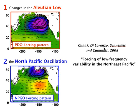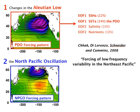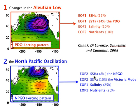A study being prepared by DeLorenzo, Snyder, and Cummins investigates the forcing of low-frequency variability in the Northeast Pacific — how these atmospheric patterns drive the upper ocean response. They find that the Aleutian Low pattern drives EOF1 of sea surface height and sea surface temperature, consistent with it being the PDO forcing pattern, but it only appears as EOF2 for salinity and nutrients. The North Pacific Oscillation pattern, in contrast, drives EOF2 of sea surface height (the NPGO), EOF2 of sea surface temperature (the Victoria mode), and also the first mode of variability in both salinity and nutrients. So the NPGO forcing pattern is the dominant mode of variability for salinity and nutrients.